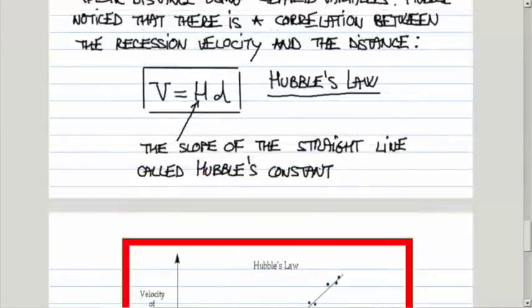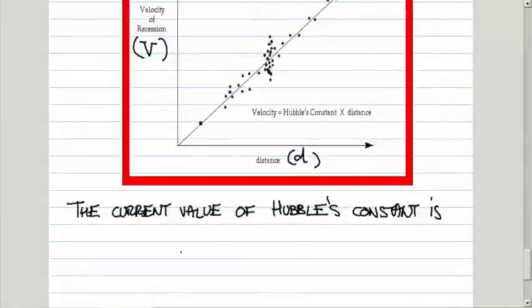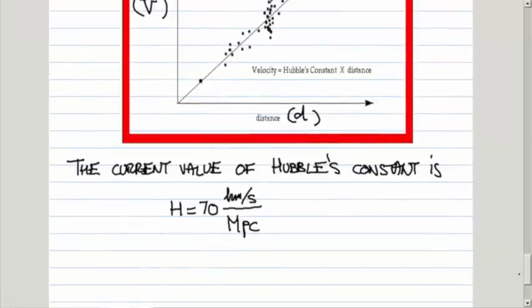The current value, I mean, there was lots of revision and so on. The current value of Hubble's constant is 70 kilometers per second per megaparsec. Just to remind you, or tell you, for those of you who did not take Astronomy 1P01.